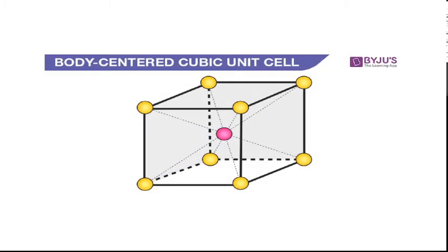The next one is the body centered cubic. Here you see that in addition to the simple cubic — that is, the atoms at the corners — you have another atom at the center. This one is the body centered atom. So in addition to the 8 atoms at the corners, there is an atom at the center, and this atom is at the body center.